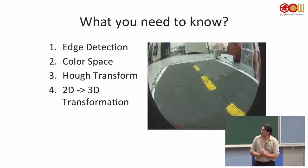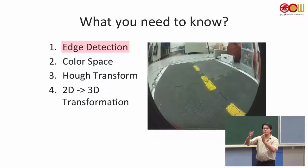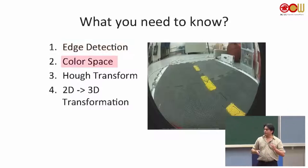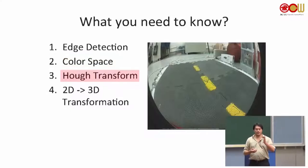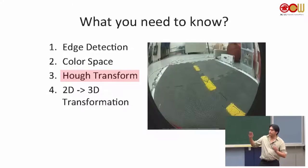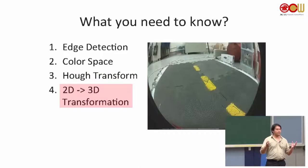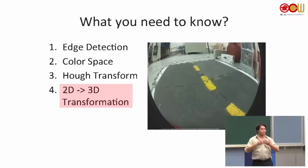We will need to know four things. The first is edge detection — we definitely want to find the boundary of the yellow or white lines. Second, we want to know that white is on my right-hand side and yellow is on my left-hand side, so we need to figure out the color space. Third, we want to find the line segments. Finally, because detection happens in the 2D image plane, we want to do a transformation from 2D to the real world.